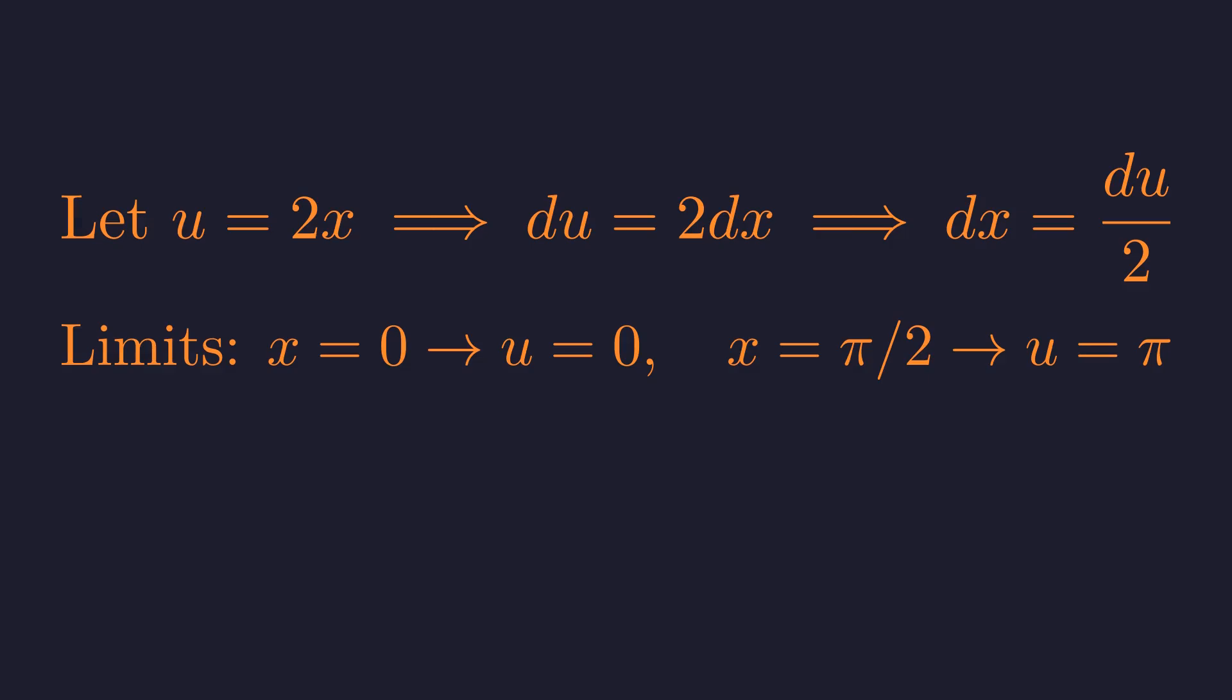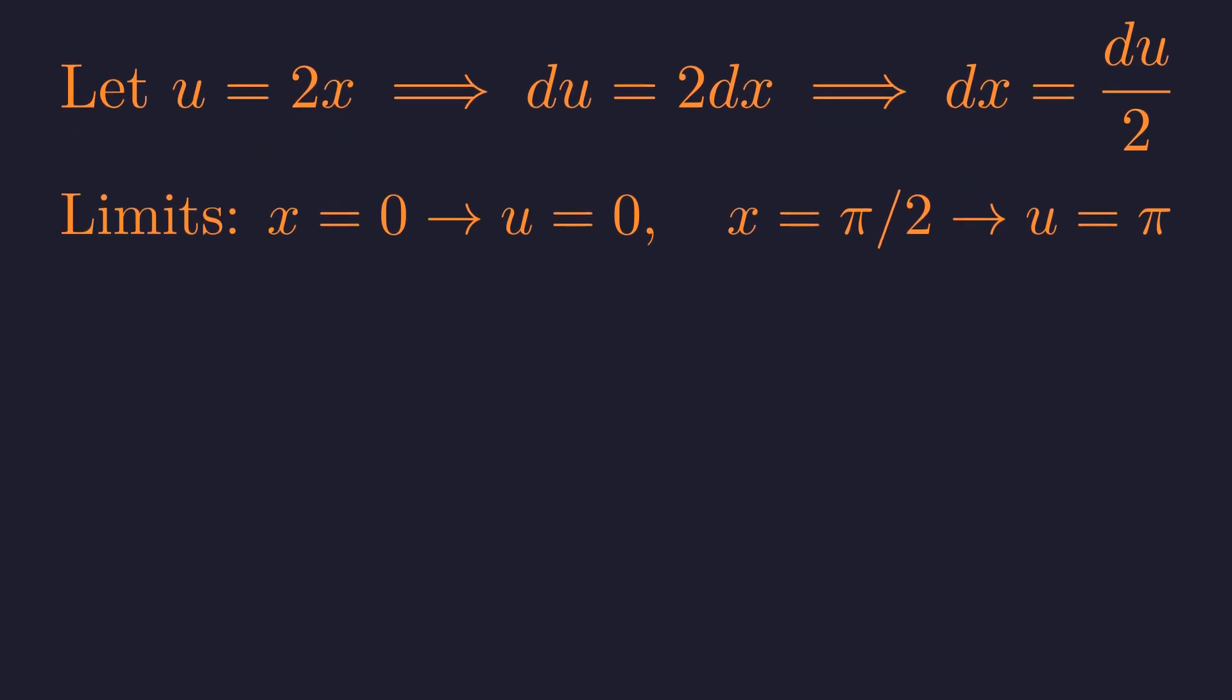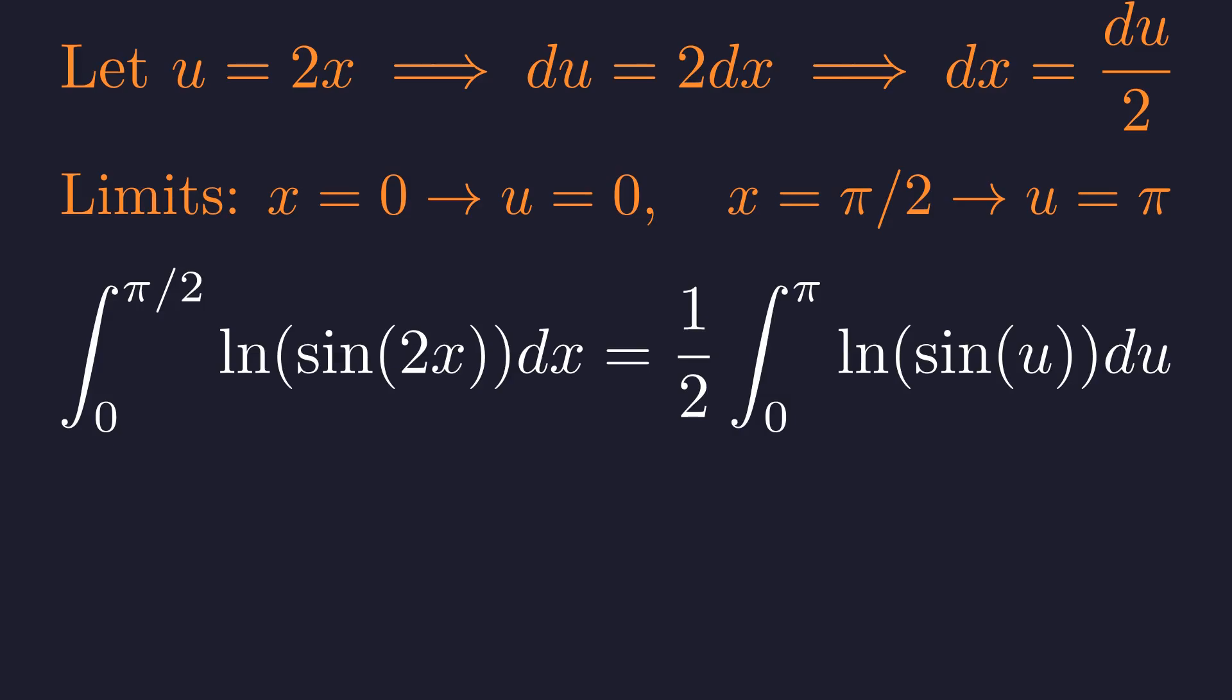Crucially, we must also change our limits of integration. The lower limit remains zero, but the upper limit becomes pi. After substitution, our integral becomes one-half of the integral from zero to pi of the natural log of sine of u.